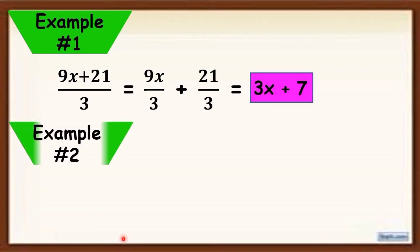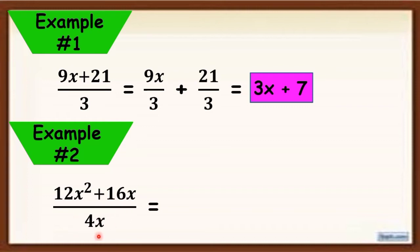Another example: 12x squared plus 16x all over 4x. Divide each term of the polynomial, so it will become 12x squared divided by 4x, plus 16x divided by 4x.